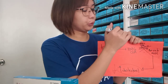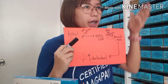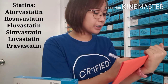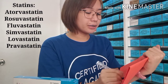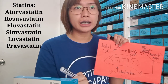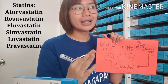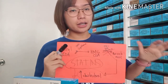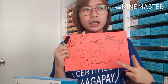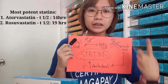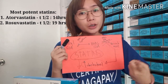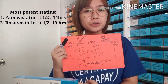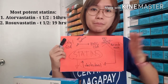We have different specific agents that fall under statins: simvastatin, lovastatin, fluvastatin, atorvastatin, and rosuvastatin. Among all these, the two most potent statins are atorvastatin and rosuvastatin. Atorvastatin has an elimination half-life of 14 hours, and rosuvastatin has 19 hours, so they have a long duration of action.